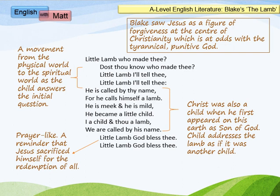In the second half of the poem, there is this synonymous relationship between the lamb, the child, and Jesus the creator. Essentially, they're all the same — that's what the poem is suggesting, because they're all united in innocence, purity, sacrifice, goodliness, and all these positive things that we would find in an innocence poem.